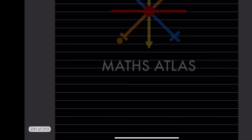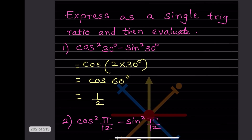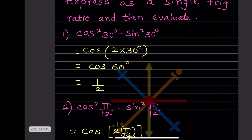Now we are told x is a single trigonometric ratio and asked to evaluate. We have cos²30 - sin²30. Using the identity cos²θ - sin²θ = cos2θ, with θ = 30, this becomes cos(2×30) = cos60.